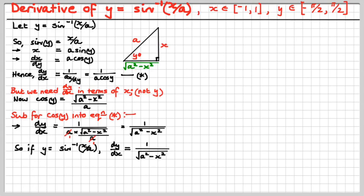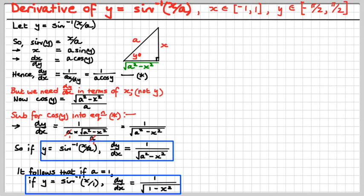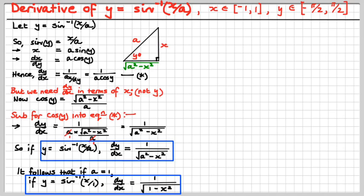So, therefore, if y equals the inverse sine of x over a — in other words, if y is the angle whose sine is x over a — then dy/dx equals 1 over the square root of a squared minus x squared. And it also follows that if a is 1, so if y is the angle whose sine is just x, dy/dx is 1 over the square root of 1 minus x squared. Remember that, and remember it well.